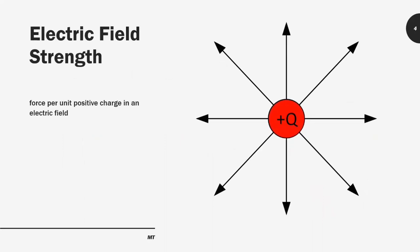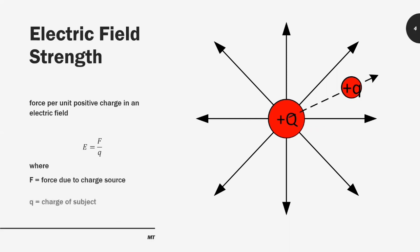The next thing we're going to look into is the electric field strength. It's defined as the force per unit positive charge in the electric field. When you have a source charge Q which produces the electric field, and then you have another charge in the field, the formula of the electric field strength is given by F divided by Q, where F is the force due to the source charge and Q is the charge of the subject. The unit of electric field strength is newton per coulomb.